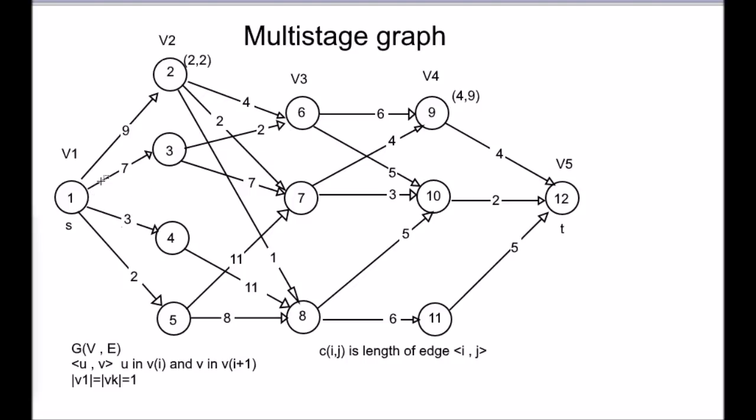This is an example of a multistage graph. It is a directed graph where the vertices are divided into various stages like V1, V2, V3, V4 and V5. Each edge is from one stage to the next stage. For example, the edge whose value is 9 is from stage 1 to stage 2. The number of vertices in the first stage and the last stage are equal to 1. The cost of each edge can be represented by C(i,j).